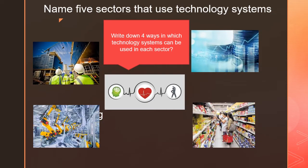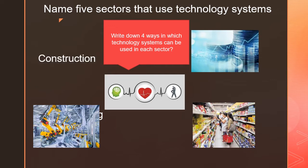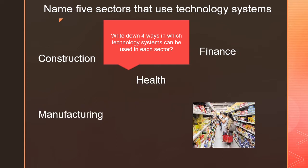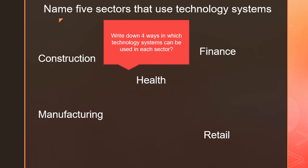The first task we're going to be working on today — you might want to pause the video at this stage — is to write down four ways that technology systems can be used in each sector below. You can choose four out of the five sectors: one, construction; two, finance; three, manufacturing; four, health; and five, retail. Pause the video and write down four. If you can get to five, that would be awesome!